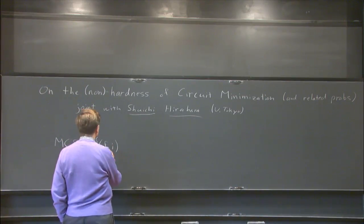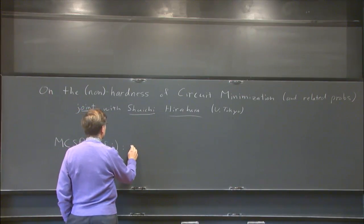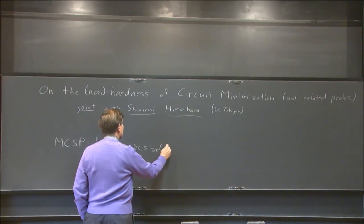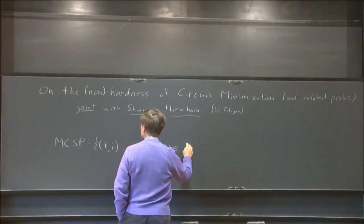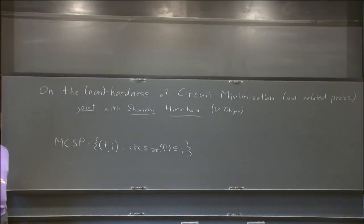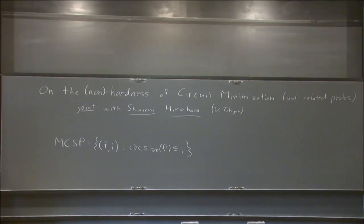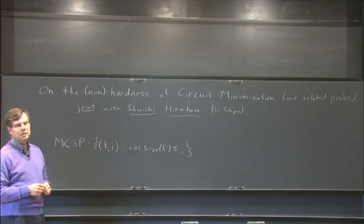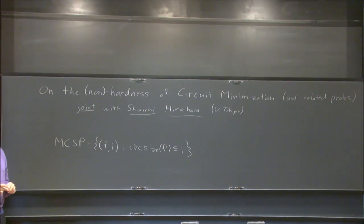So you've got two numbers, F and I, and you want to know if the circuit size of F is less than or equal to I. It's obviously in NP, because you've got the entire truth table, and the circuit doesn't need to be any bigger than that. You've just got a linear number of points that you need to guess the circuit and evaluate it on, to see if it evaluates to the given bit of the truth table.